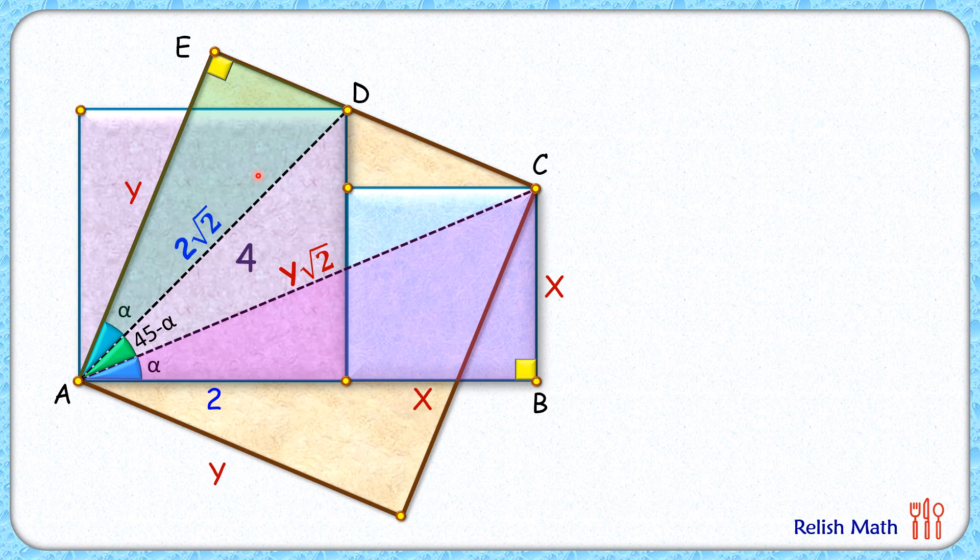For this green triangle, we are taking the hypotenuse AD upon base AE, which will equal the ratio of hypotenuse AC upon base AB. Putting the values, we get 2√2/y equals y√2/(2+x).